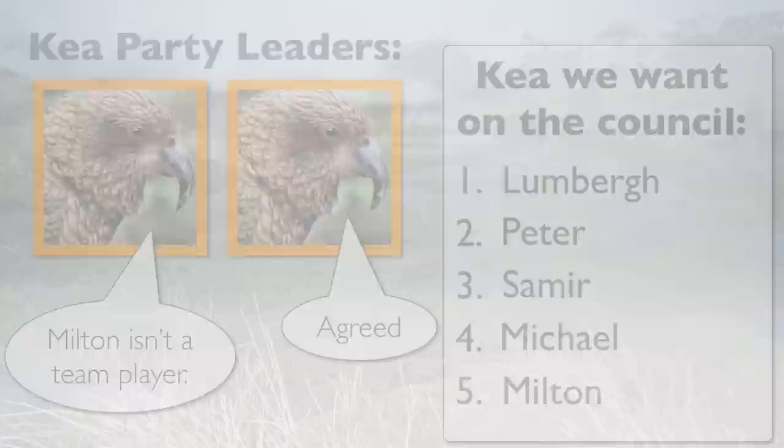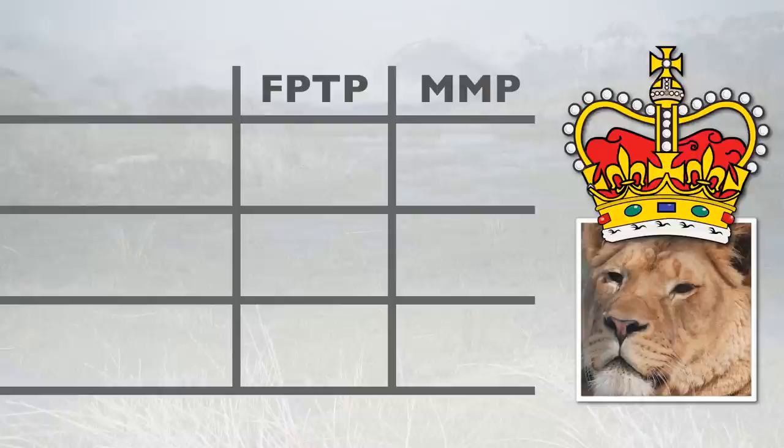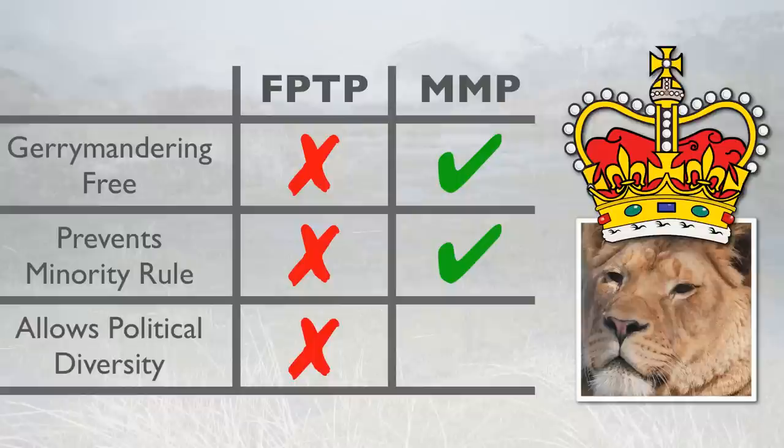While this may be a disadvantage of MMP, there are a number of other benefits that Queen Lion in particular likes. Because fewer votes are wasted, it mostly eliminates gerrymandering and prevents minority rule. It also gives more choice to the citizens by encouraging political diversity.